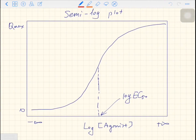This is a linear plot. And here we have a semi-log plot. On the y-axis, it is still response. On the x-axis, it is logarithm of the concentration of the agonist. In this case, the x-axis starting from negative infinity,